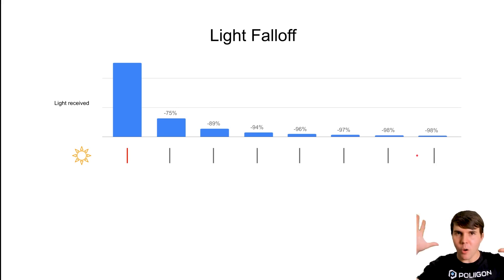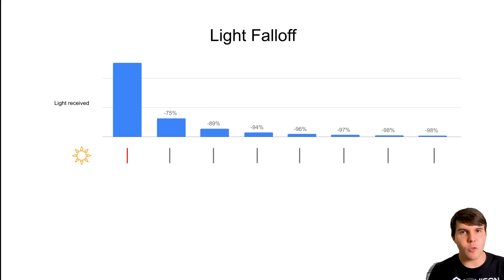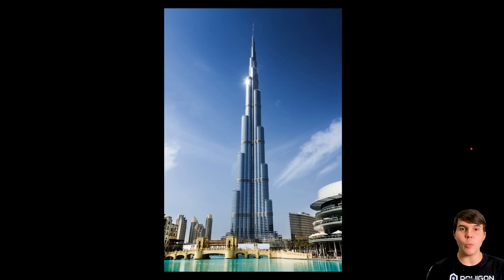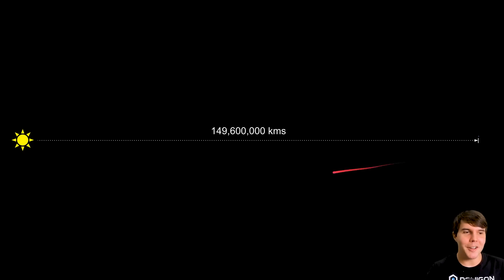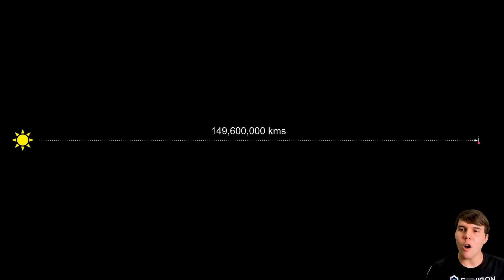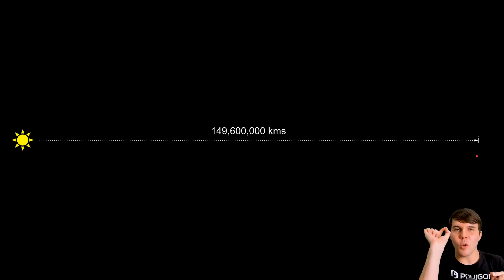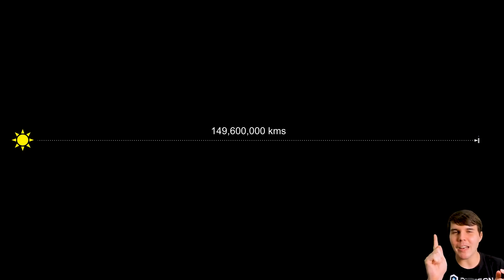The important concept to wrap your head around is that the further away something is from a light source, the less fall-off you're going to get. This is why we can look at a building from the very top all the way down to the floor and see seemingly the same amount of light — because the sun is almost 150 million kilometers away, so that final tiny distance between the top and bottom of a building is so infinitesimally small that the fall-off is almost imperceptible. At that point, it almost becomes like constant light.